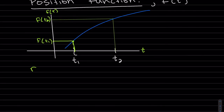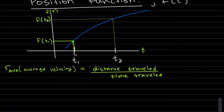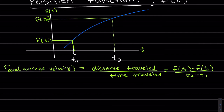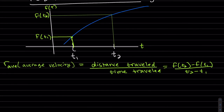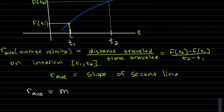We're going to have the average rate, or the rate is also the average velocity, which is distance divided by time traveled. The distance traveled is the y-value divided by the time. This is on the interval shown in the picture. So on an interval, it looks like we have the slope of the secant line — that's the average rate. Same formula.